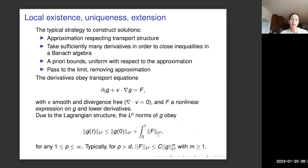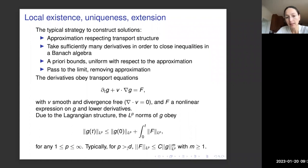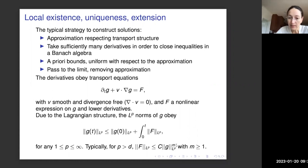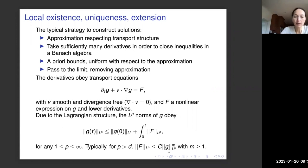For all our models, if we take p strictly greater than the dimension, then we can typically estimate the non-linearity in L^p by a constant times a superlinear power of the L^p norm of G. This is enough to establish local existence and uniqueness.